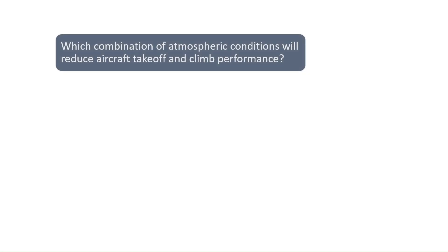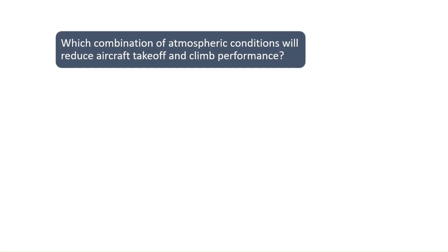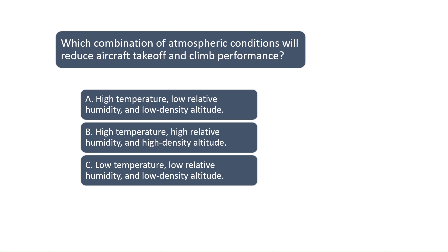Which combination of atmospheric conditions will reduce aircraft takeoff and climb performance? See Chapter 11 of the Pilot's Handbook of Aeronautical Knowledge for more information on how temperature and humidity affect aircraft performance. Higher air temperatures and high humidity result in lower air density and higher density altitude. The combination of high air temperature and humidity decreases aircraft performance. The correct answer is B.